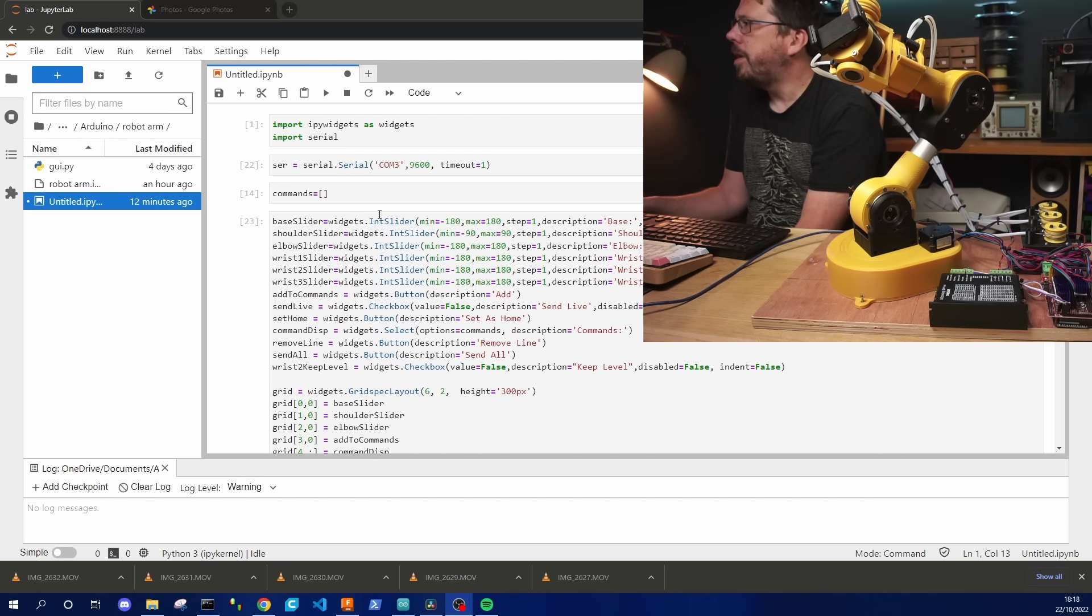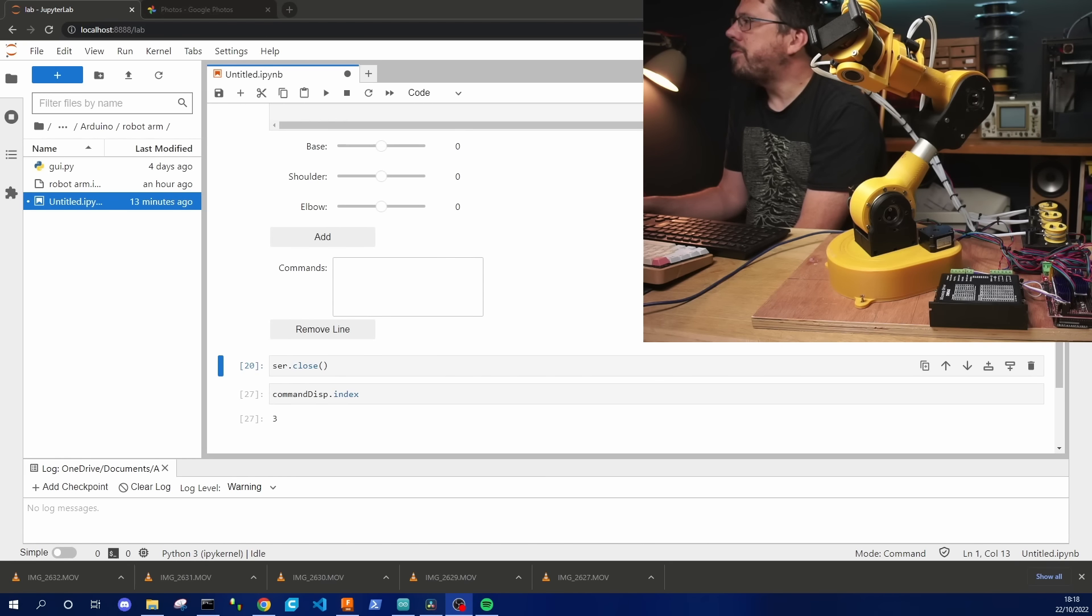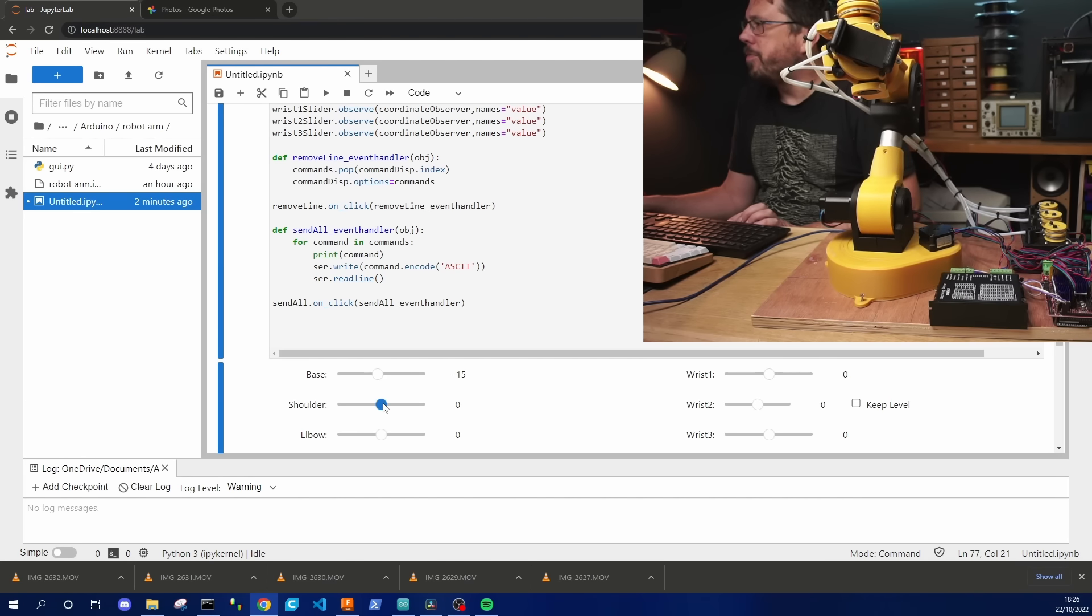Of course the joy of accepting serial commands is we don't just have to type them in, we can do it with programs. Here I've just written a bit of quick Python code in JupyterLab to make a very simple GUI for the robot. I can just move each of these sliders around and the corresponding joint on the robot should move.